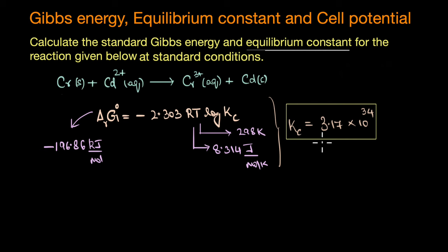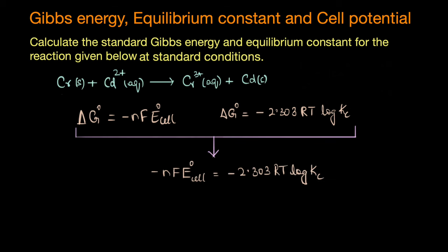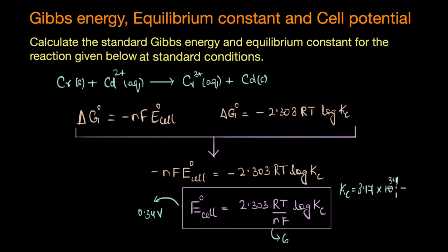Alternatively, we can find Kc directly from the standard cell potential. Combining the two equations — ΔG° = −nFE°cell and ΔG° = −2.303RT log Kc — gives a direct relationship: E°cell = (2.303RT / nF) log Kc. Substituting E° = 0.34 V, n = 6, and the known constants R, T, F, we again obtain Kc = 3.17 × 10³⁴, confirming the earlier result. This very large value means the reaction almost entirely favors formation of products.